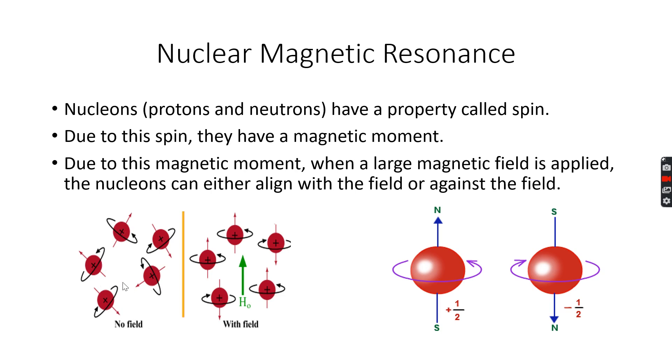Since these protons have a magnetic field on their own as they are spinning, when we apply a large magnetic field, these protons can either align with the field. As you can see this proton, this proton and this proton, they have aligned with the field. Or they can align against the field, as you can see this proton and this proton.